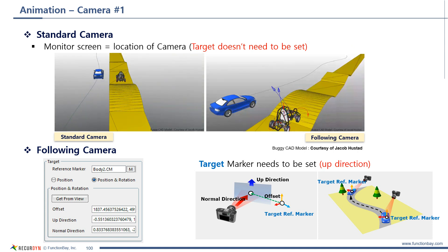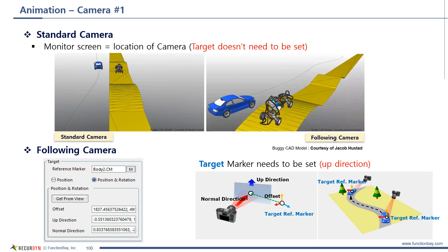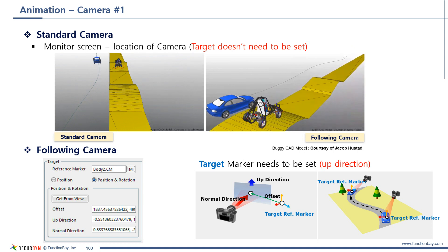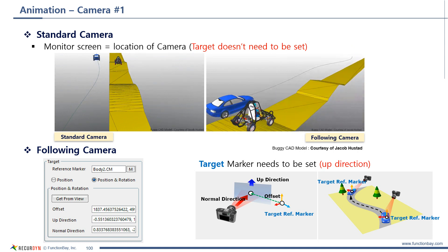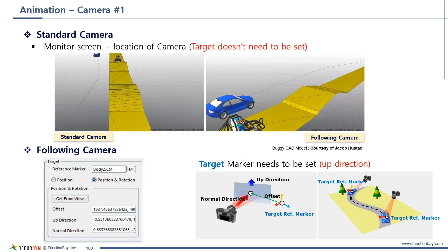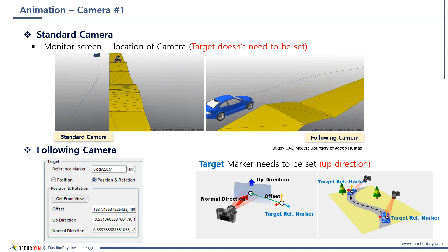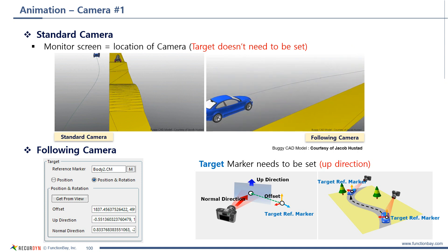If you use following camera, the camera follows a specified target during animation. This is very useful when you want to observe an object with a lot of movement. In the following camera dialog, the target marker needs to be set for up direction.